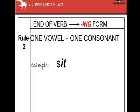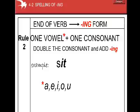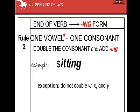Rule number two: one vowel plus one consonant. What happened here? In this case, I is the vowel, T is the consonant. We double the consonant and add ING. Exception: do not double W, X, and Y.